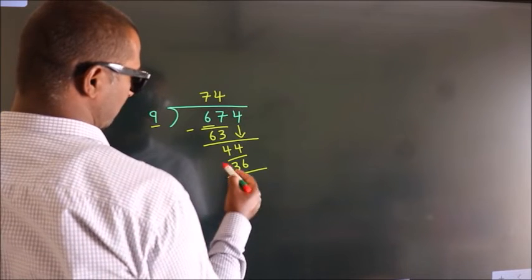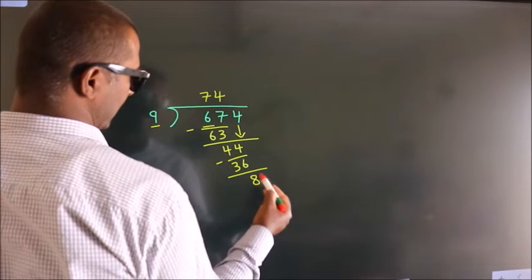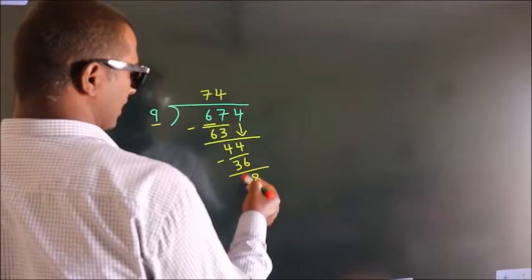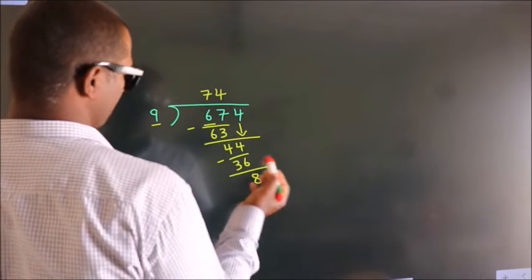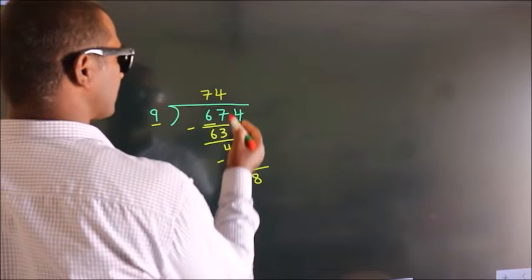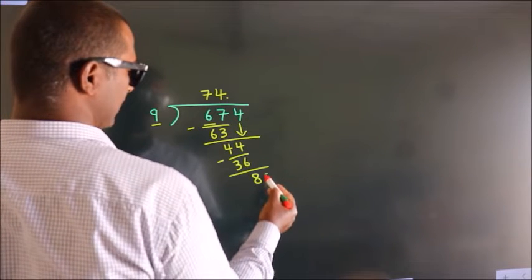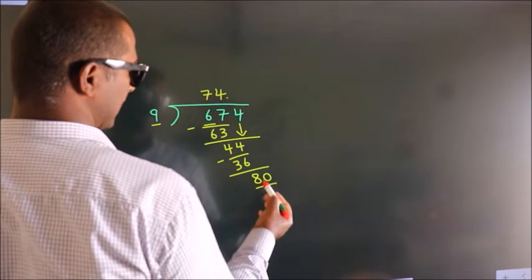Now we subtract, we get 8. After this, no more numbers to bring it down. So what we do is, we put dot take 0. So 80.